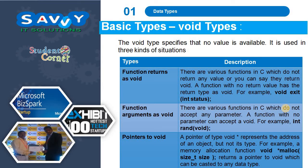The void type specifies that no value is available. It is used in three kinds of situations. First, functions returning void: various functions in C do not return any value, for example void exit(status). Second, function arguments as void: functions that do not accept any parameter can accept a void, for example int rand(void). Third, pointers to void: a pointer of type void* represents the address of an object but not its type. For example, malloc(size) returns a pointer to void which can be cast to any data type.